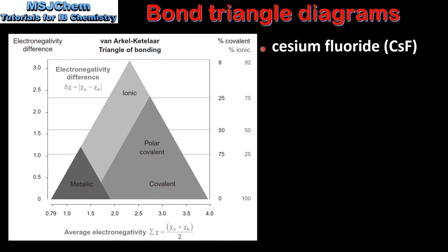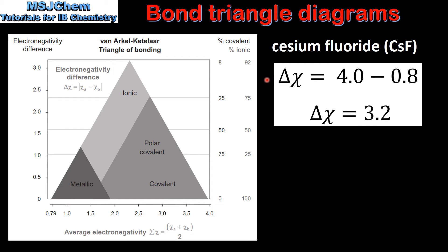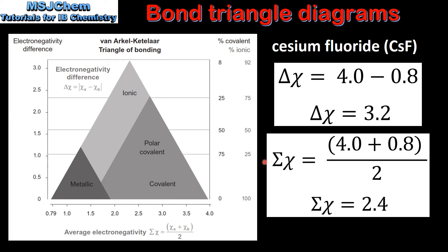In our next example we will determine the type of bonding in cesium fluoride. The first step is to determine the difference in electronegativity between fluorine and cesium. We subtract the electronegativity value of cesium from that of fluorine to get 3.2. Next we calculate the average electronegativity by adding the values and dividing by 2, which gives us 2.4. So on the y-axis we have 3.2 and on the x-axis 2.4, which tells us the type of bonding is ionic.